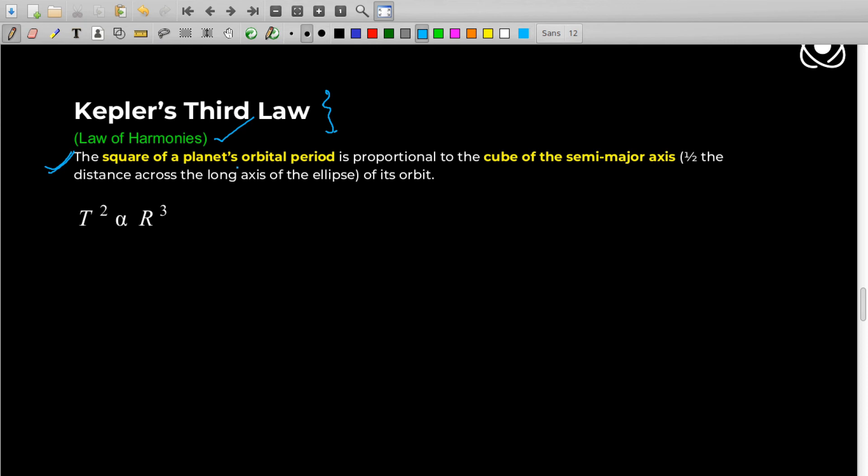Let's see the statement again. It says that the square of a planet's orbital period, let's say t, is proportional to the cube of semi-major axis. So I told you what is semi-major axis, right? It's the half of the major axis of an ellipse.